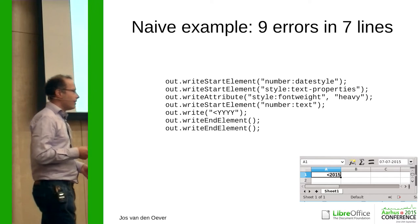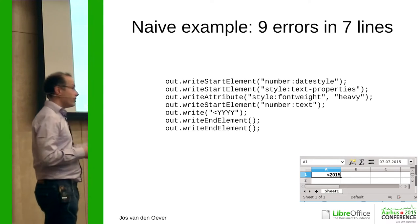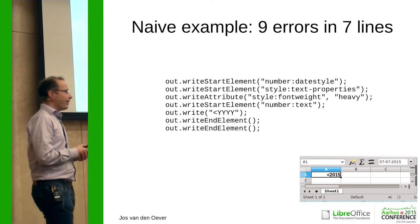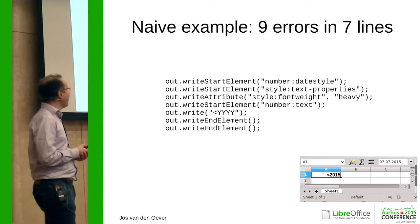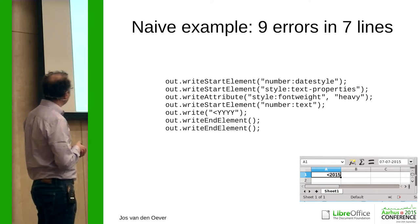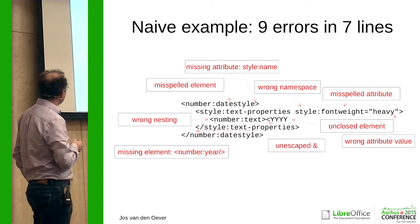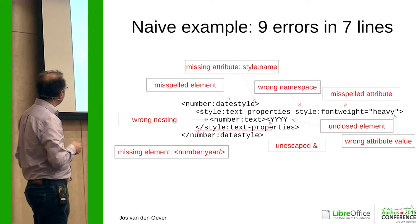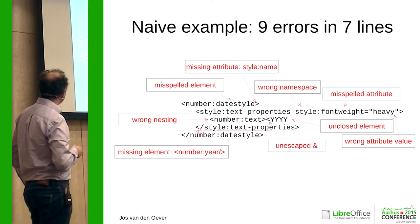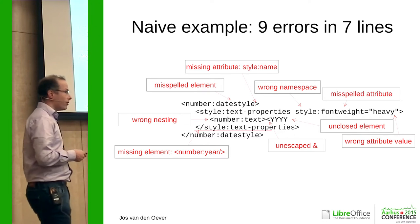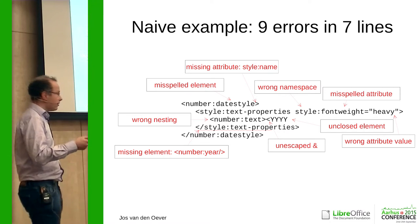Can anybody spot at least one of them? Yes — I'm missing an end element. Exactly. However, this will compile. You'll only see this at runtime. Another error: I'm using font weight 'heavy', but it should be 'bold'. So there are nine errors: a misspelled element name, wrong namespace, an unescaped character, wrong nesting — it should go behind, not inside — a missing element, and more. Nine errors in just seven lines of code, and the compiler just takes it, no problem.